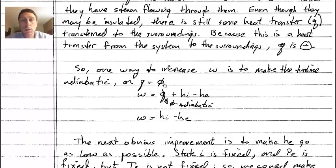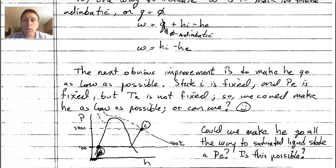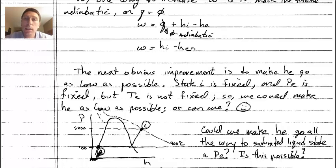Making the turbine adiabatic sets q equal to zero, so the first law gives work transfer as simply h-i minus h-e. The next obvious improvement is to minimize h-e — to make the difference between h-i and h-e as large as possible. Since we've fixed the inlet condition and only specified the exit pressure, the question becomes: how low can we make h-e?